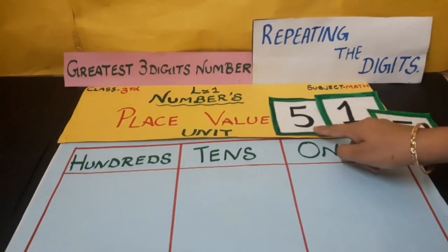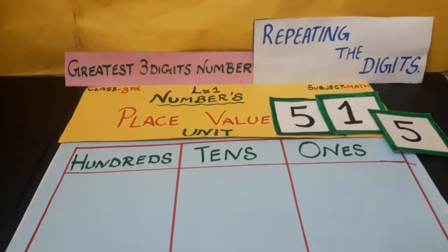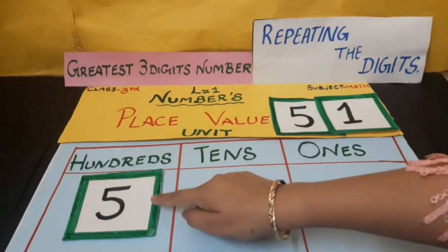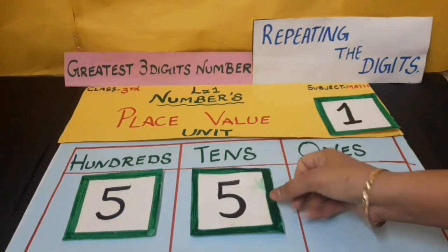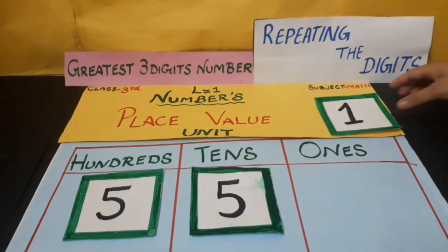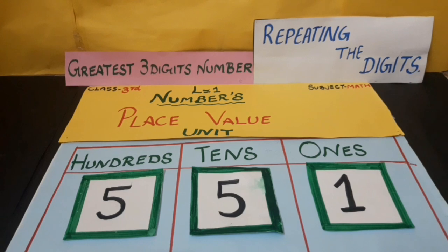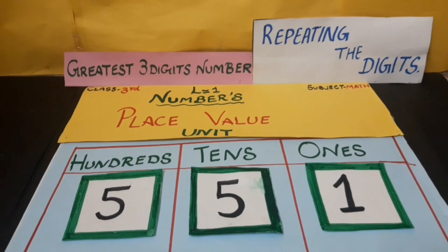See again — it's now 5, 1, 5. When we form the greatest number, we start from the greatest digit. So we put 5 on the 100s place — that's 500. Another 5 is on the 10s place, and 1 on the 1s place. So the greatest 3-digit number by repeating the digit is 551.